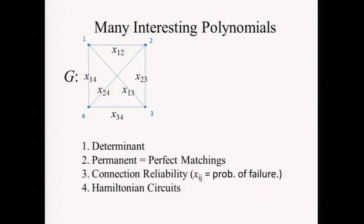There are many interesting polynomials you can construct on a graph. The determinant is equivalent to linear algebra; the permanent I've discussed. You can also regard each variable as the probability of that edge failing and compute reliability questions about a network — the probability it disconnects, or that some node gets isolated. All these things are just polynomials in these variables. You can also make up the Hamiltonian circuits polynomial. It turns out the determinant is easy, but almost all the other ones are hard — the best known method is some exponential computation.